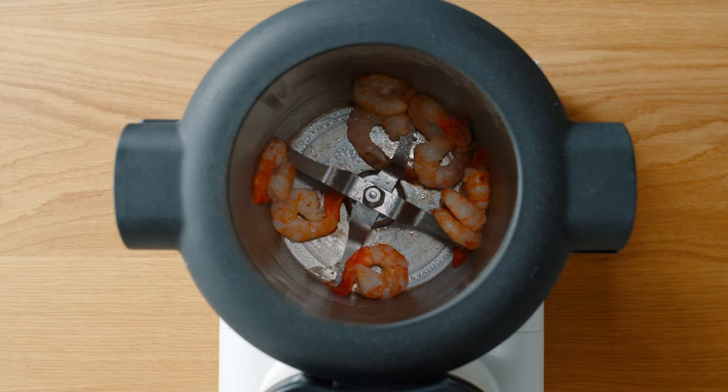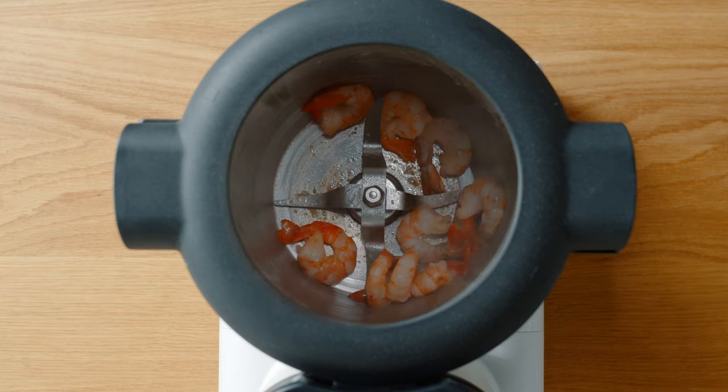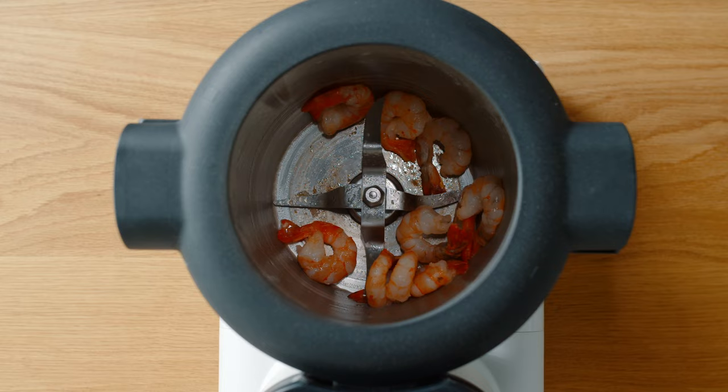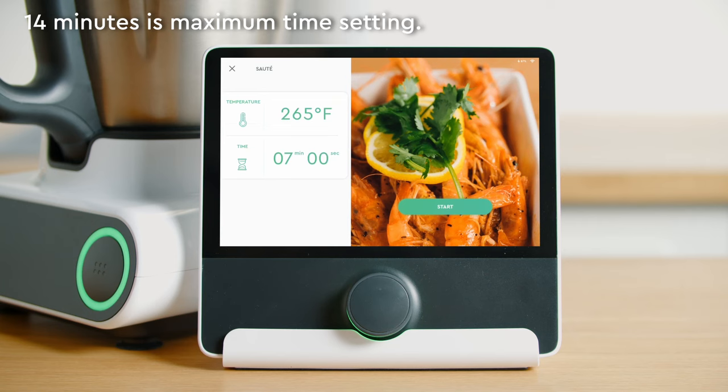On saute mode we have the blade spinning around intermittently. It will spin for five seconds then it will stop allowing time for the food to saute. After 30 seconds it will spin again. The temperature is adjustable and there is a maximum time of 14 minutes on saute mode.